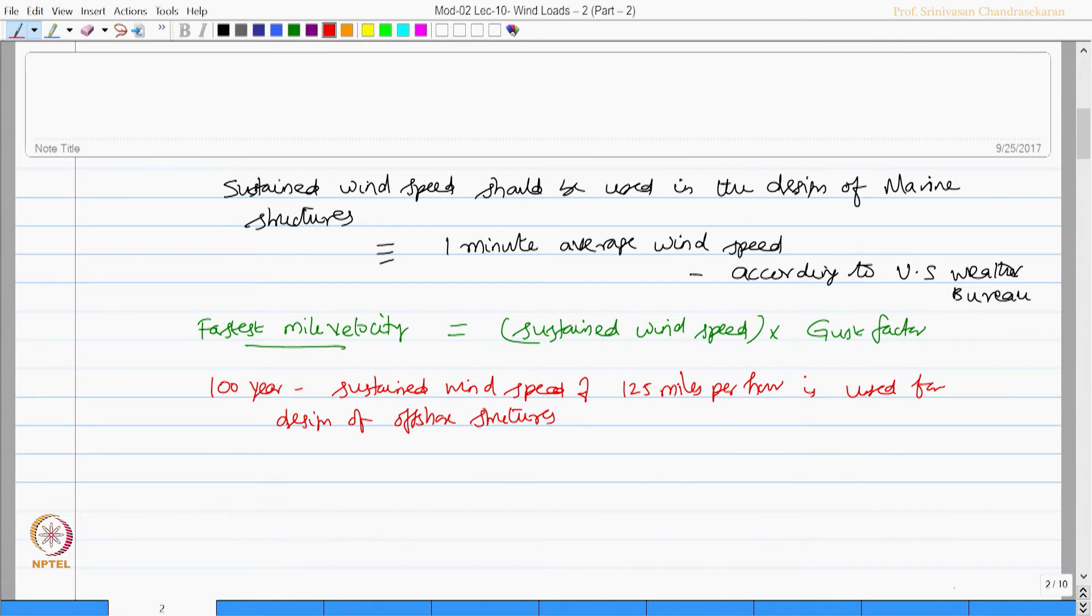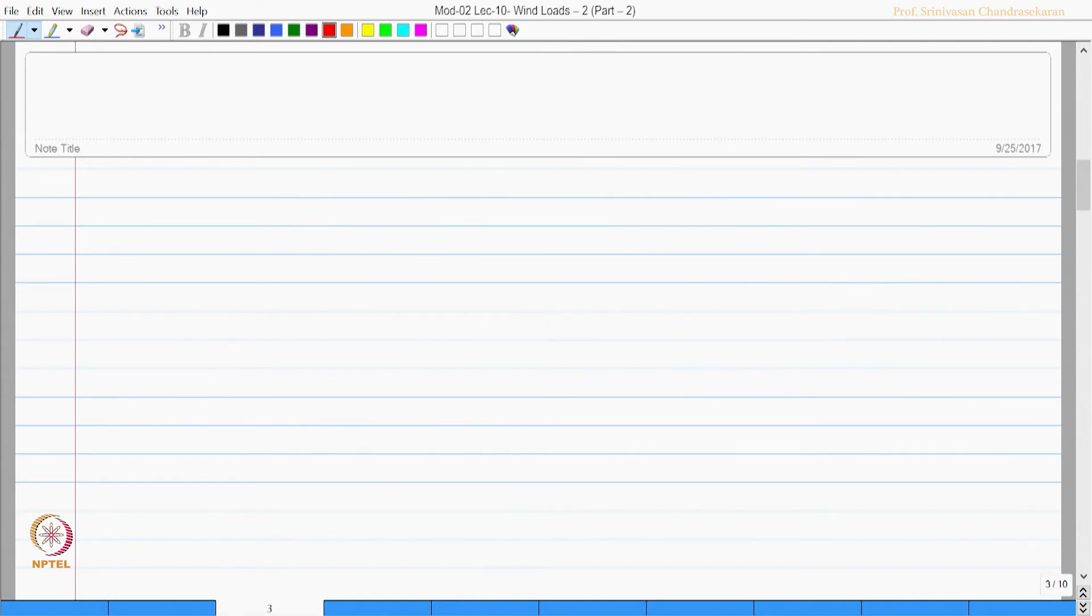Having said this, let us see how wind velocity spectra are available and discussed in the literature. There are various spectra available for wind energy.